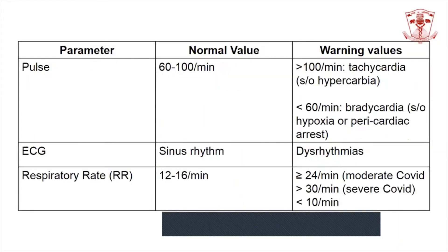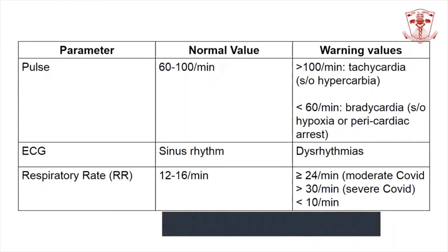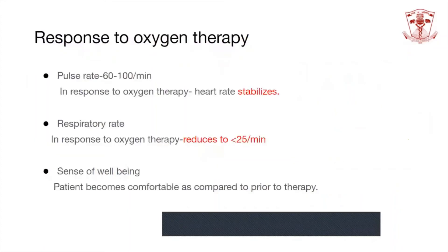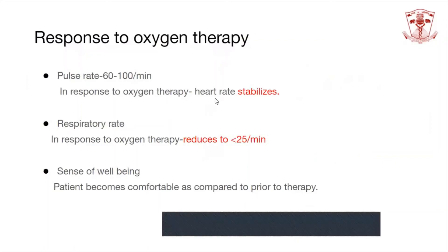Other parameters used are pulse rate, ECG, and respiratory rate. These parameters are also used to detect response to therapy. In response to oxygen therapy, pulse rate tends to stabilize and fall compared to before therapy started. The respiratory rate also reduces, falling below 25 per minute, and the patient becomes more comfortable. These measures can be used to assess the effect of oxygen therapy and note the improved level of oxygenation.